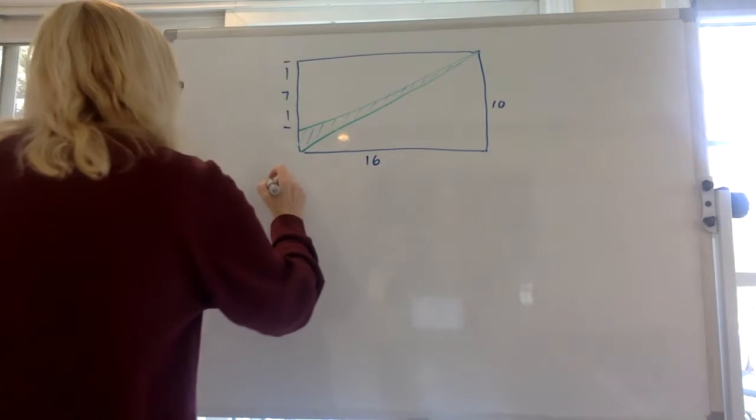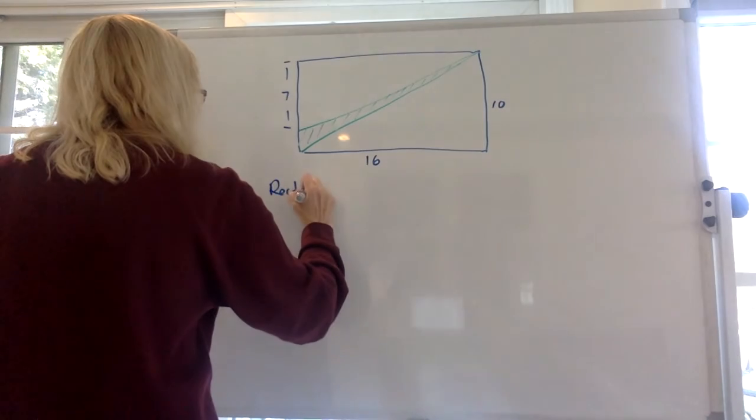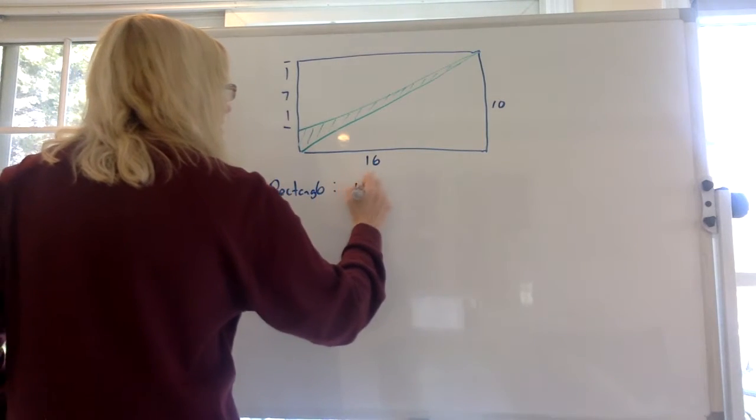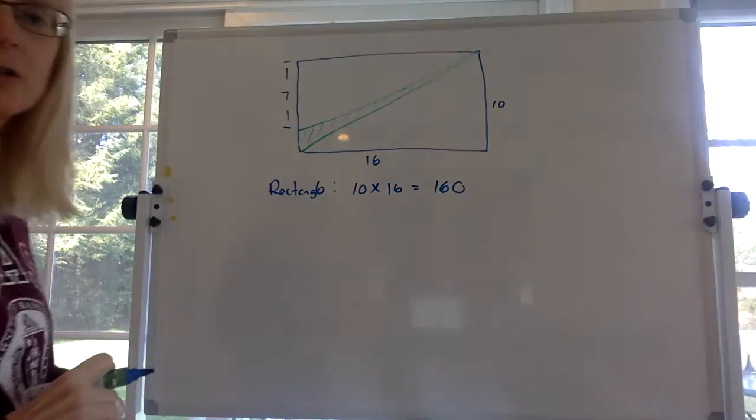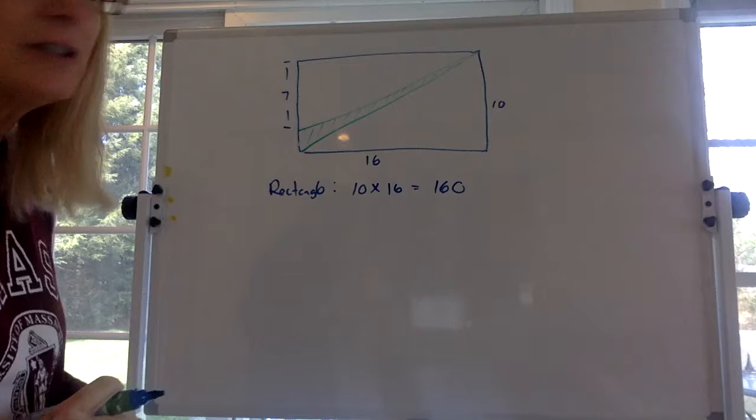So the rectangle is 10 by 16, so that's 160 square units. That's 160.